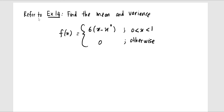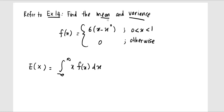Now we proceed to the next example, referred to as example 14. It is given that our PDF is f(x) = 6x − x² where x is between 0 and 1. The question is to find the mean and also the variance.